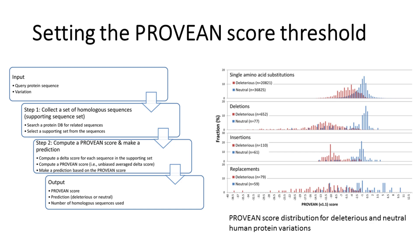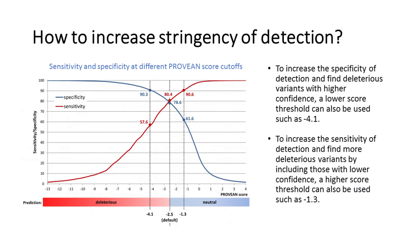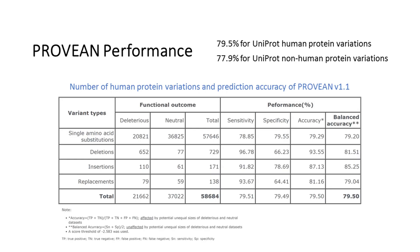For maximum separation of deleterious and neutral variants across all four classes of human protein variants, the default score threshold is currently set at -2.5 for binary classification. To increase specificity and find deleterious variants with higher confidence, a lower threshold such as -4.1 can be used. To increase sensitivity and find more deleterious variants including those with lower confidence, a higher threshold such as -1.3 can be used.